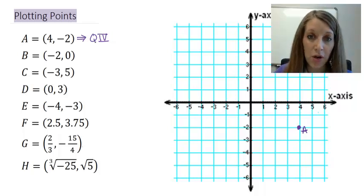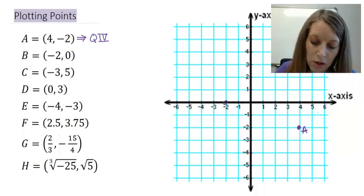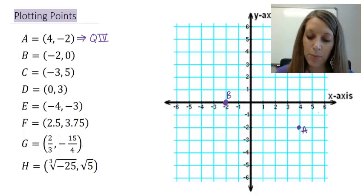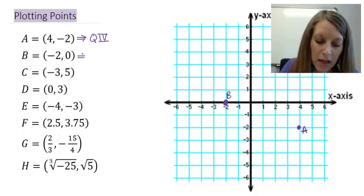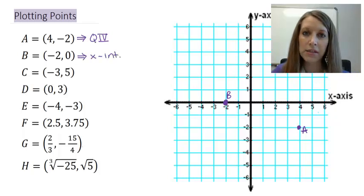So I'm going to work through most of these very quickly. Point B is (-2, 0). So that's left 2 units. You do not count up or down any. So that's where point B is. I can see that it intercepts my X axis. So that one is called an X intercept.